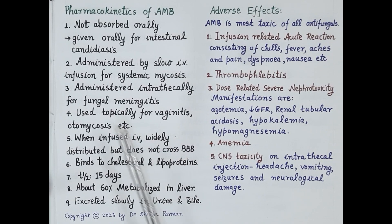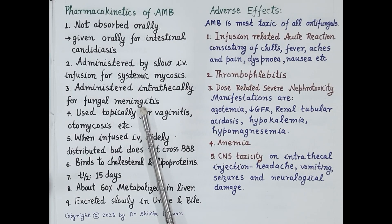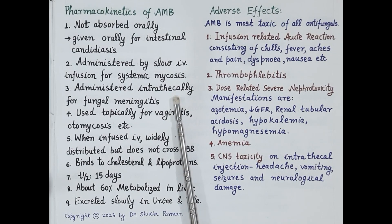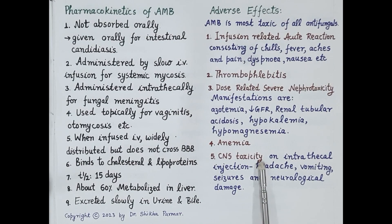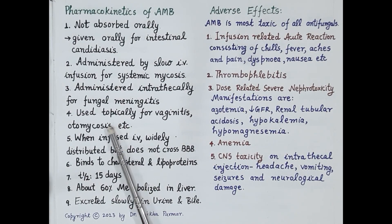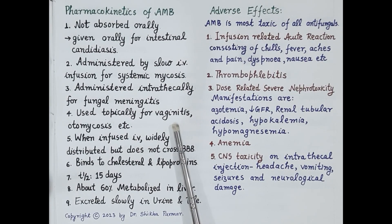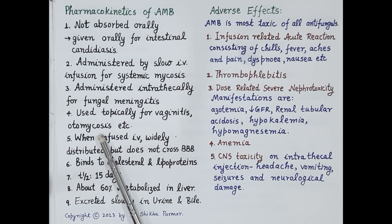For the treatment of fungal meningitis — that is fungal infection of the brain or spinal cord — amphotericin B is administered by the intrathecal route, which can be dangerous and cause CNS toxicity. It is also used topically for superficial infections like fungal vaginitis and otomycosis, which is fungal infection of the outer ear canal.